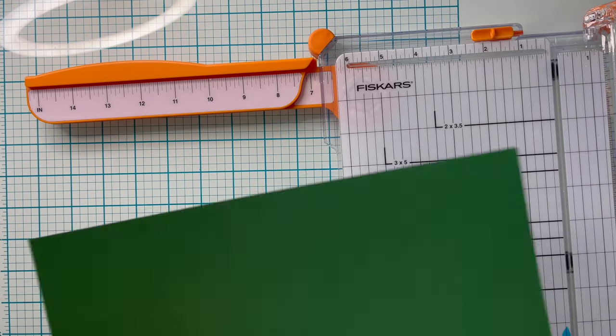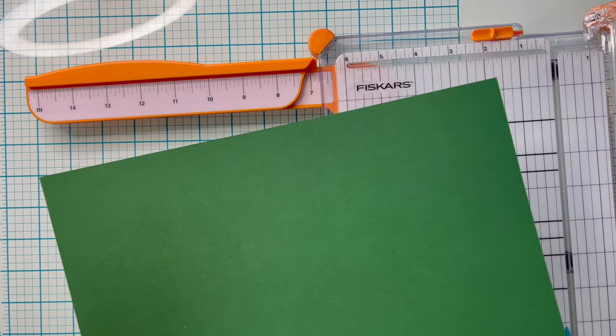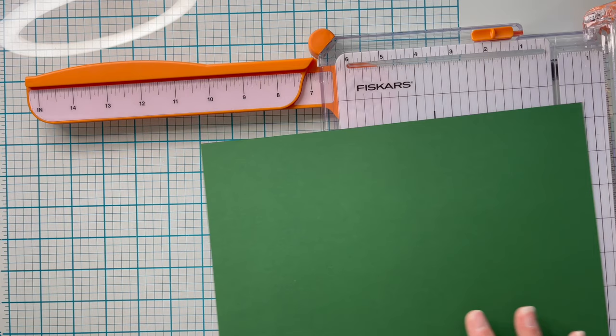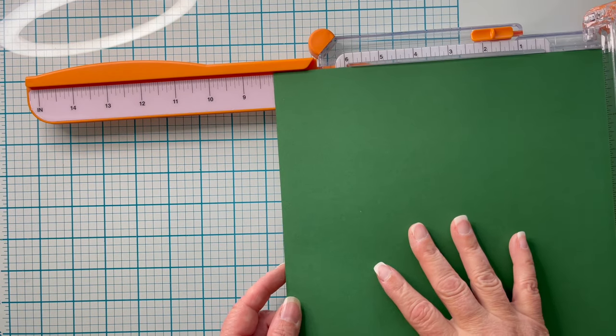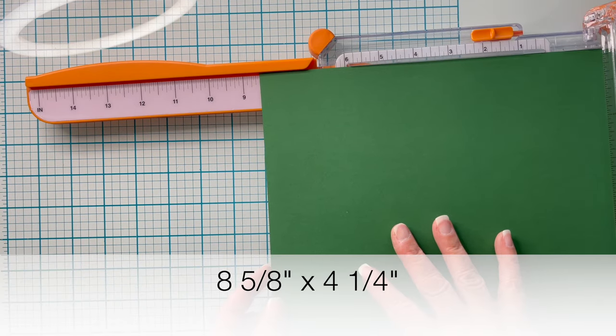I'm going to be cutting down my card base, which in this case happens to be green, down to 8 and 5/8 inches by 4 and 1/4 inches.